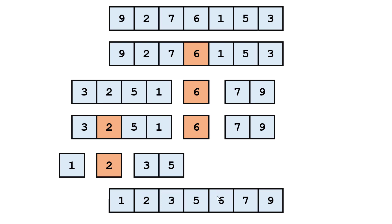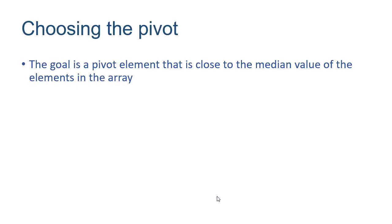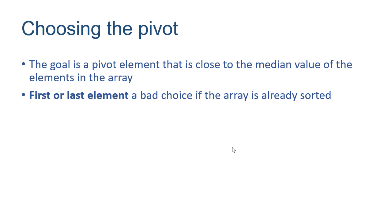Before we see the implementation, let's talk about how we choose our pivot. The ultimate goal is to pick a pivot element as close to the median value of the array as possible, because that means we split the array in two — half the elements go to the left and the other half go to the right.